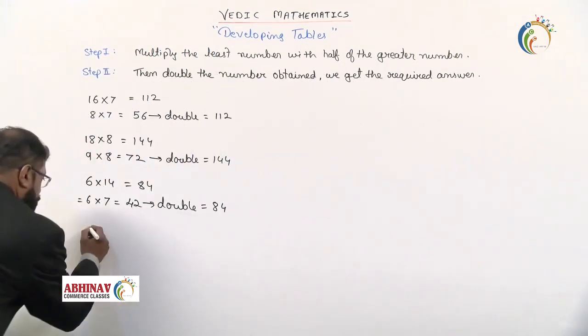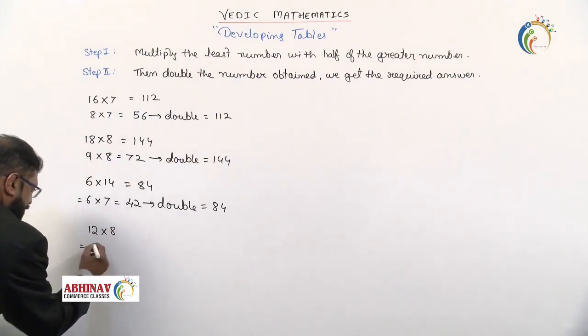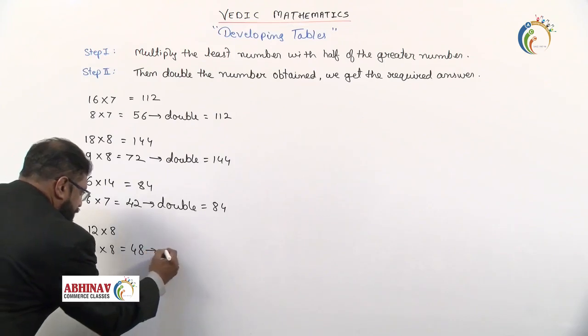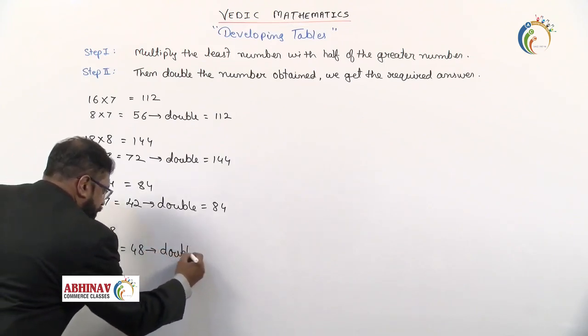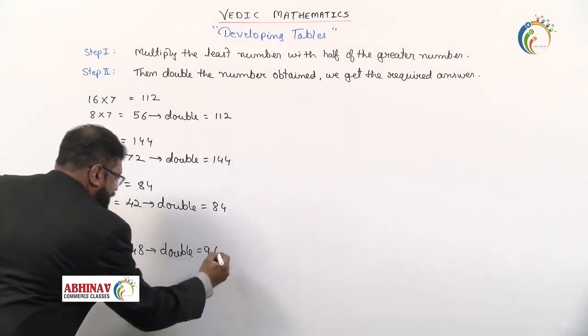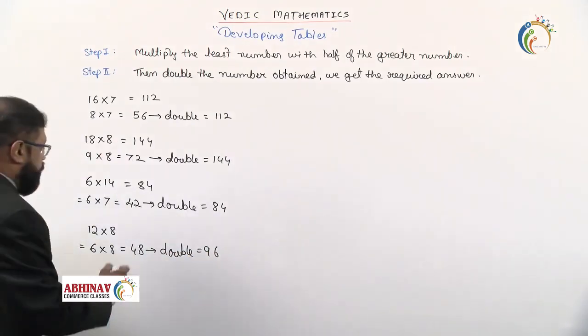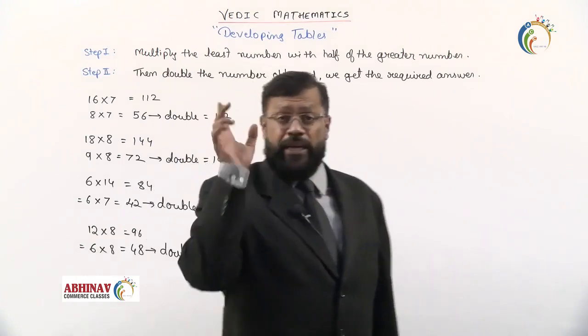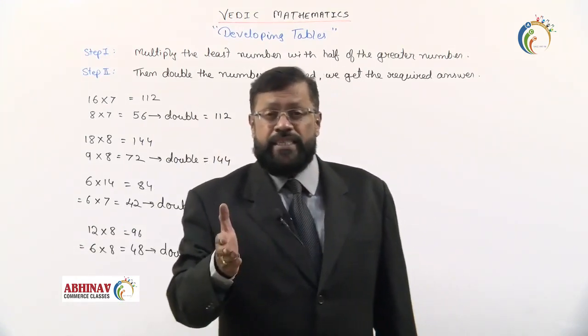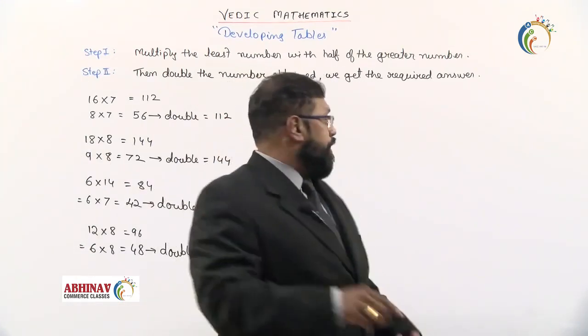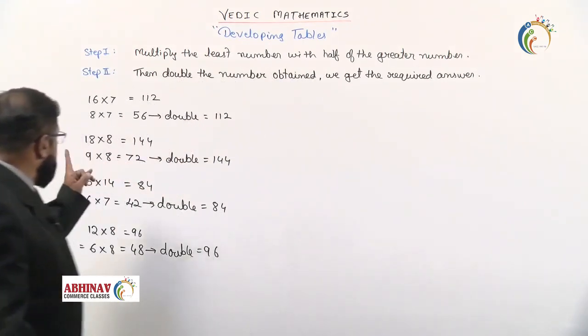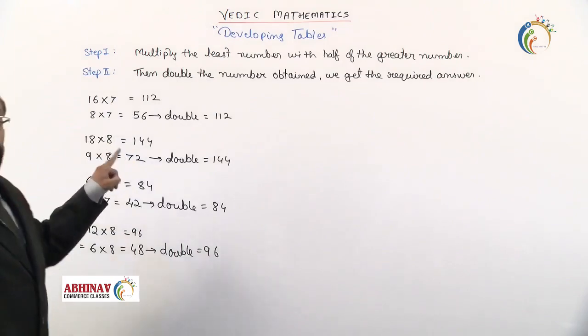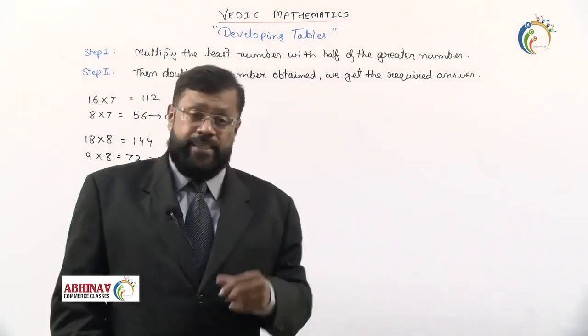Then say for example it is 12 into 8. 12 is the greater number, so 6 into 8, what we get is 48. This 48 we double, what we get is 96. So 12 eights is 96. This is how we can develop the tables with even numbers: 12, 14, 16, 18 and so on. Now if we observe here, two digit table is multiplied with single digit. What happens if both are double digit numbers? Let's see.